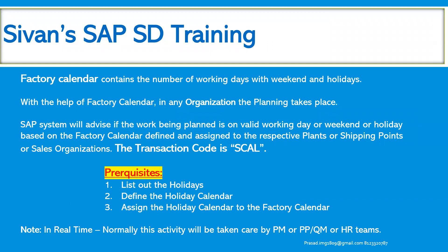The factory calendar contains the number of working days with weekends and holidays. It determines the number of working days as well as the holidays. With the help of the factory calendar, any organization plans their activities. The SAP system will advise if the work being planned is on a valid working day or falls on a weekend or holiday. Based on the factory calendar, we assign it to the respective plants, shipping points, or sales organizations.